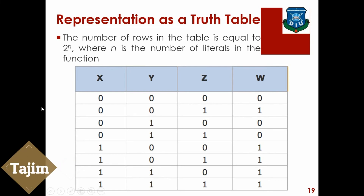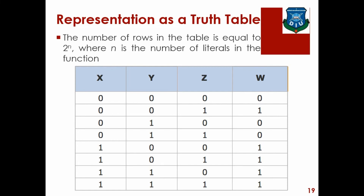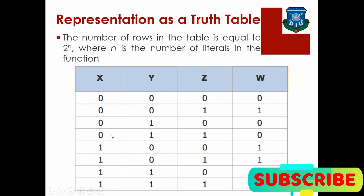When we have x and y, we have 2 squared, which means 4 — so 4 input combinations. And we have 0,0; 0,1; 1,0; 1,1. When we add z, we have 2 cubed, which means 8 — so 8 input combinations for three variables.